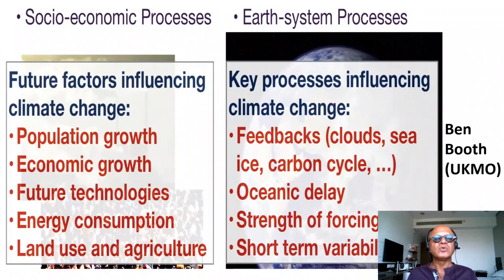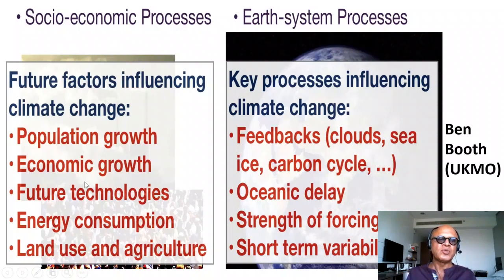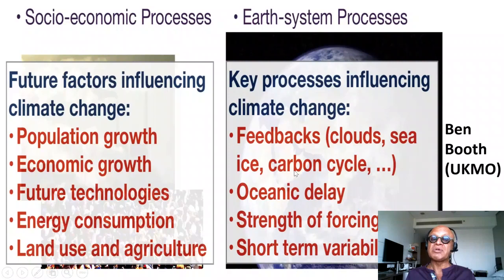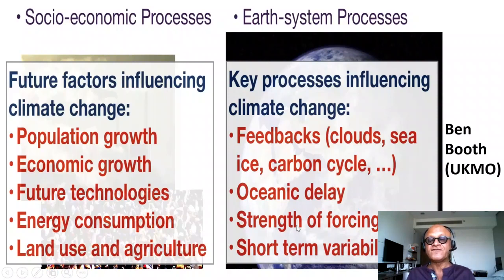We want to include socioeconomic processes — not just being impacted by climate change but future factors influencing it: population, economic growth, future technologies, energy consumption, and land use and agriculture. Key processes influencing climate change include feedbacks like clouds, ice-albedo feedback, biogeochemical feedback, and oceanic delay — the ocean can store heat for a long time and release it. We also worry about the strength of the forcing, the rate of change of radiative forcing and emissions, and short-term variabilities from sub-seasonal to seasonal or year-to-decade timescales.